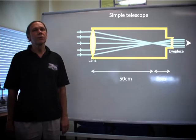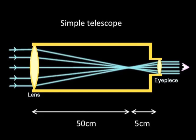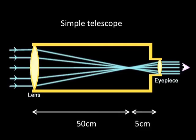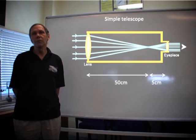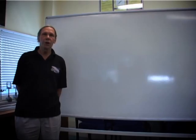We could use a simple ray diagram to explain this, and show how far apart the two lenses need to be. From this diagram, we can see that the separation of the lenses needs to be the sum of the focal lengths. In this case, 50 centimetres plus 5 centimetres, or 55 centimetres.